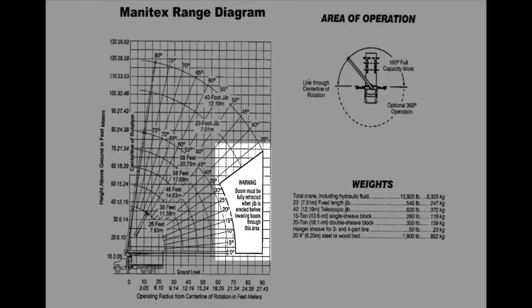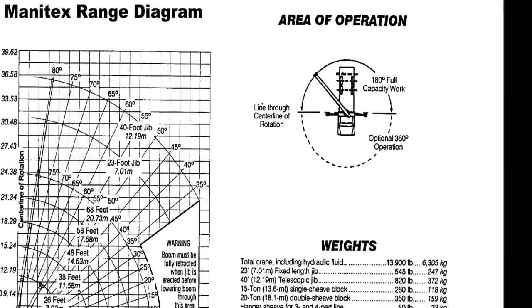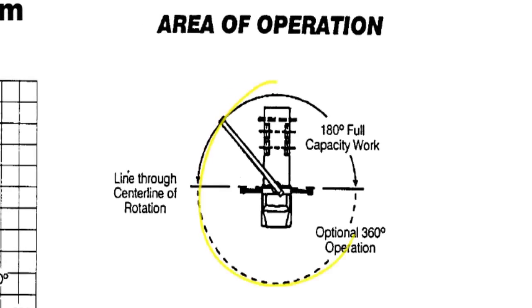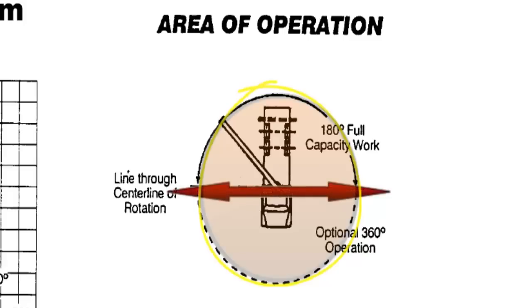Be sure to note the warning label from 0 to 32 degrees. Number 4: Area of Operation. This diagram provides a bird's eye view of the rotation and its capacities.